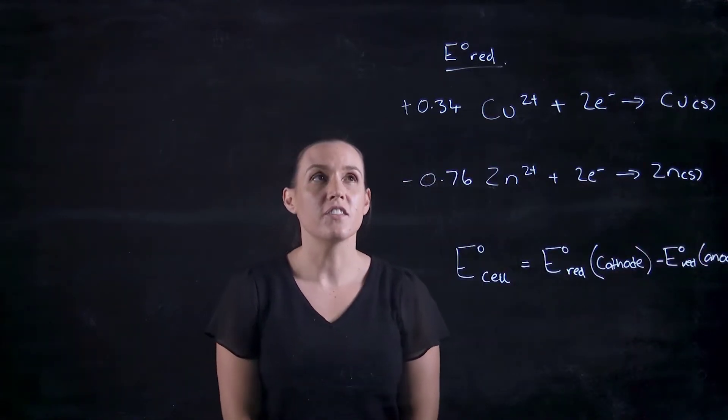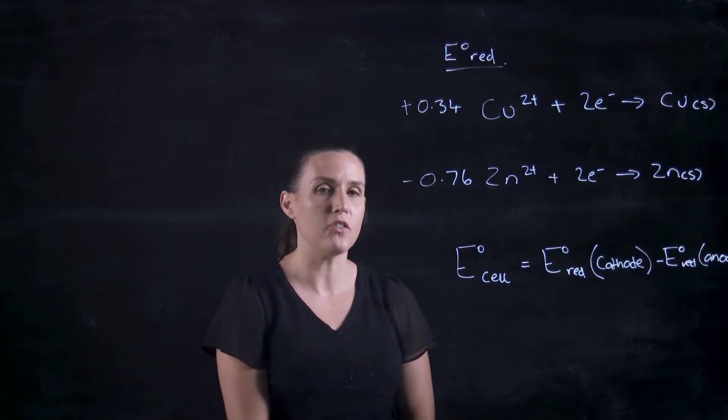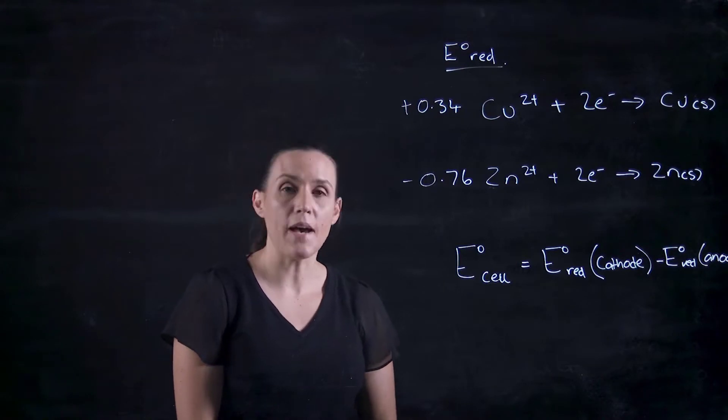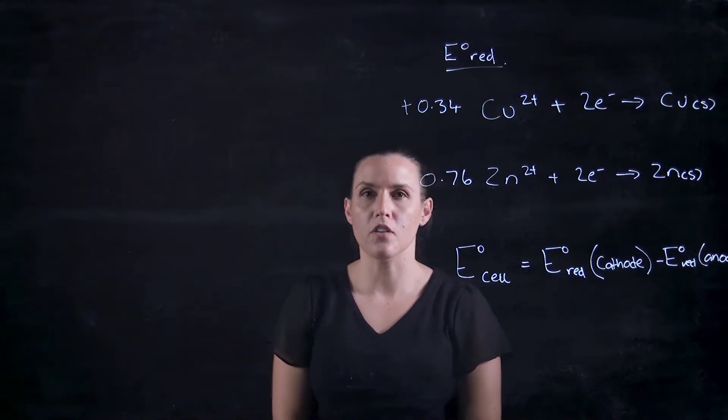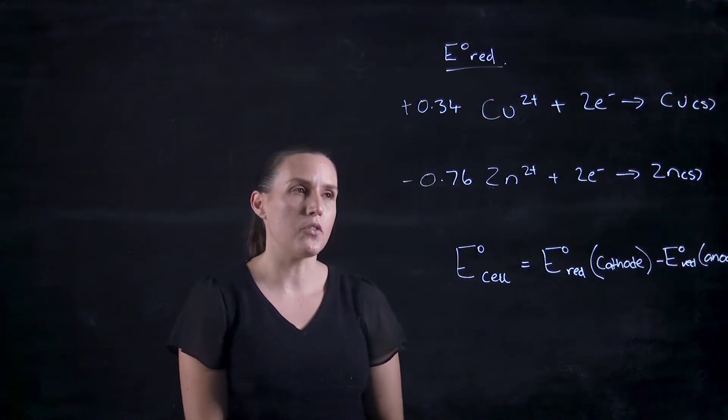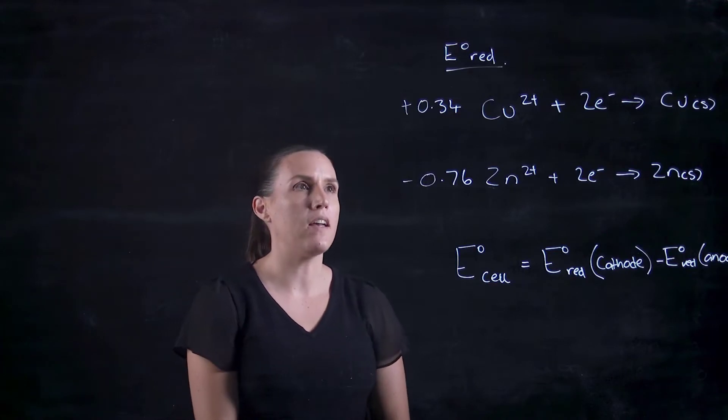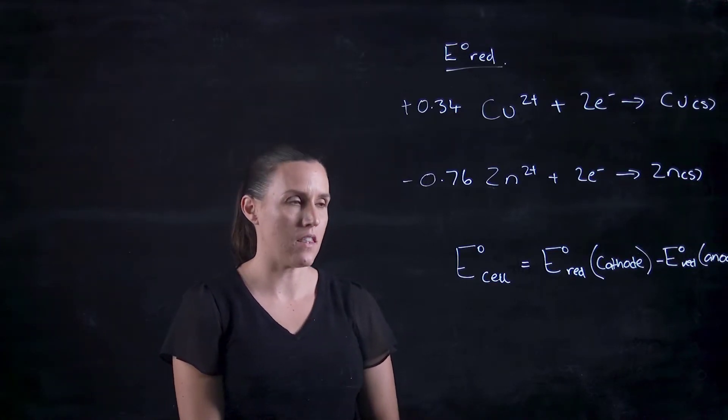Hi, welcome to this video. Today I'm going to teach you how to work out the EMF or E naught of the cell - so how many volts are being produced from the reaction. We're going to look at copper and zinc when they're together.